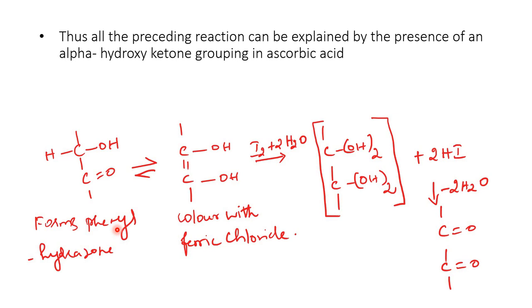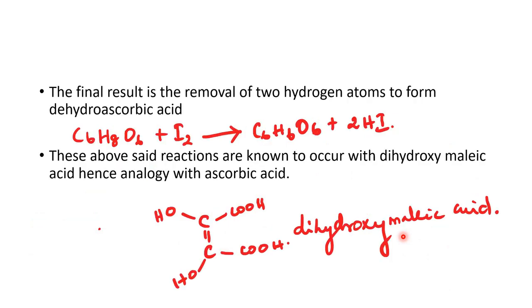Thus, all the preceding reactions can be explained by the presence of an alpha-hydroxy ketone grouping in ascorbic acid. Alpha-hydroxy ketone group which forms violet color with ferric chloride. Again, this is on treatment with aqueous iodine. It forms an intermediate compound along with two molecules of HI, and then which on heating with removal of two molecules of water produces a diketo compound. Final result is the removal of hydrogen atoms to form dehydroascorbic acid. These above set reactions are known to occur with dihydroxy maleic acid. Hence, analogy with ascorbic acid.